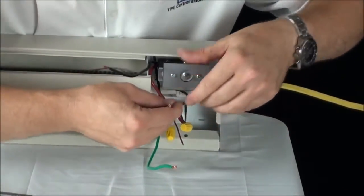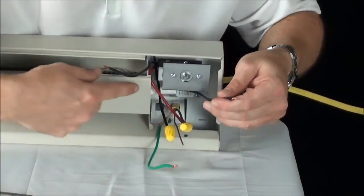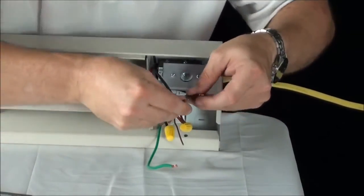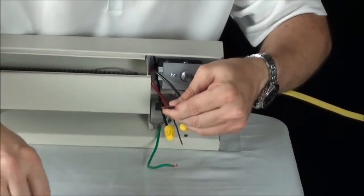You have two wires left: a black wire coming from your element and a black wire coming from your thermostat. We'll hook those two together.